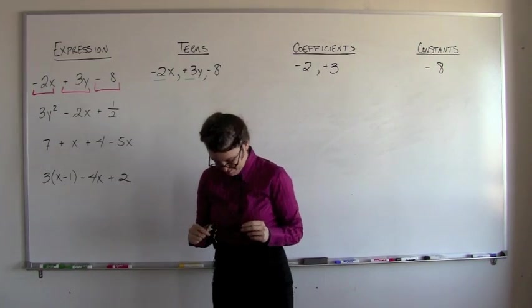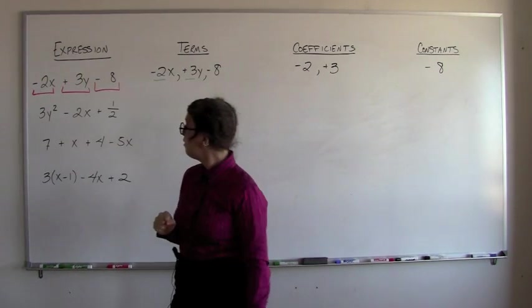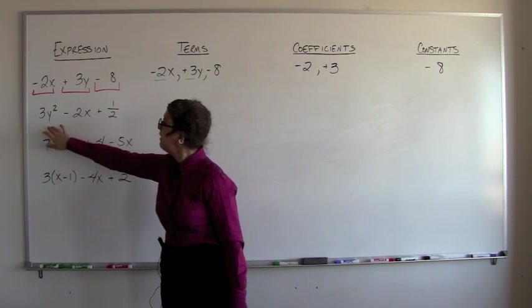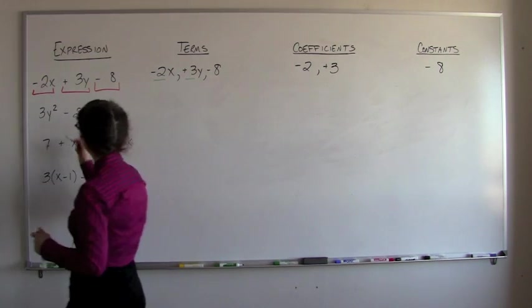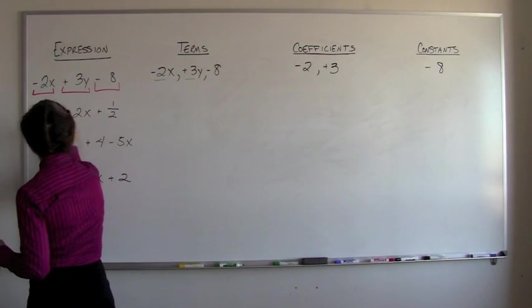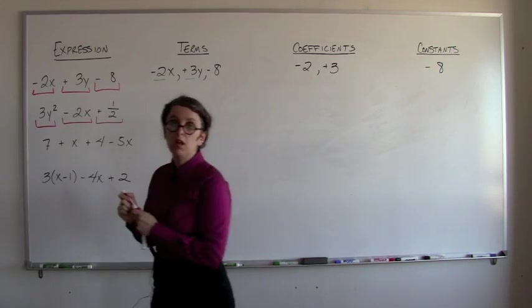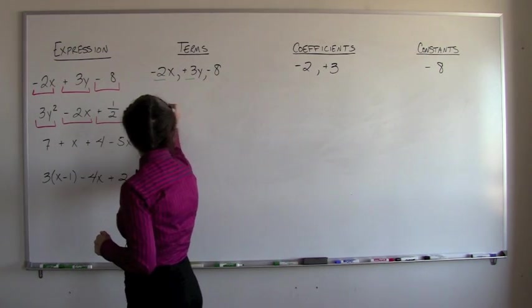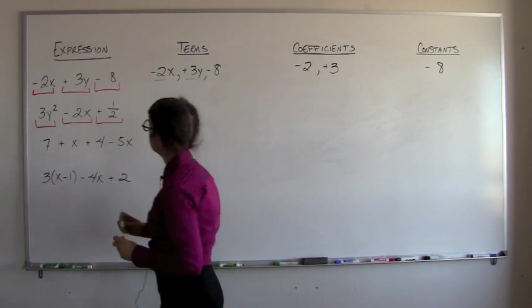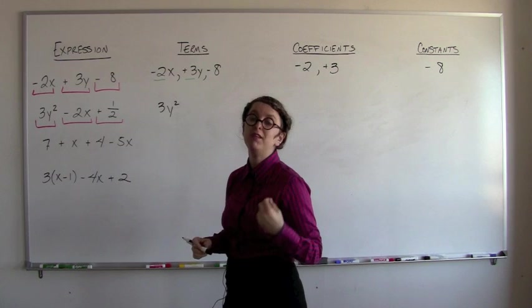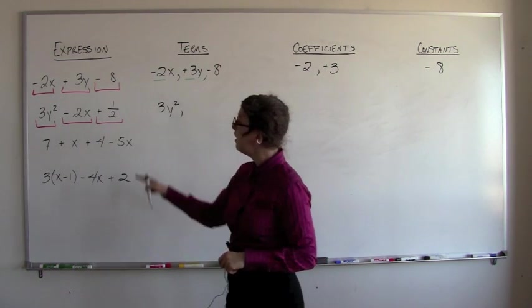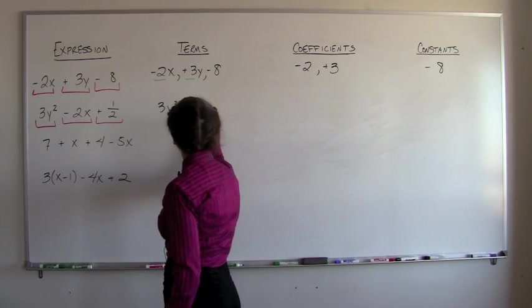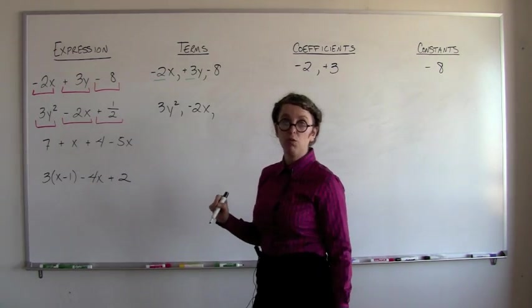Let's try another one. So we have another expression right here. This expression has three terms: here, here, and here. The first term is 3y squared. The second term is negative 2x. That minus sign belongs to that term. The last term is 1 half.